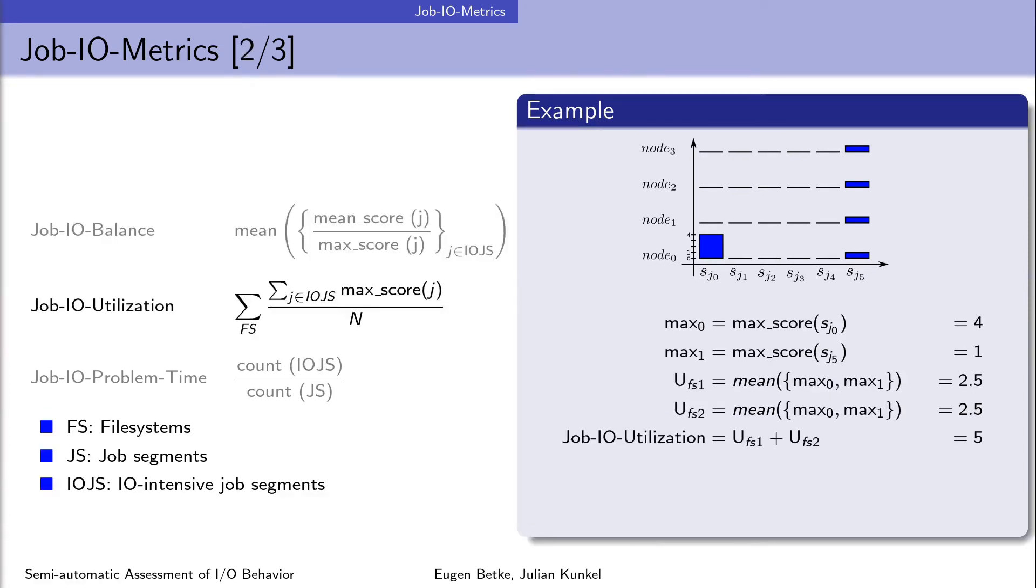Large jobs with a large number of I/O accesses can induce slowdown on the file system for other jobs. To identify such jobs we compute the job I/O utilization metric that shows the average load during I/O relevant phases. Assume that in the example data is accessed on two file systems in parallel. For computation we use again only the I/O intensive segments, the first and the last one. We find the highest metric scores for these segments on each node and compute the mean values. This is the utilization of a file system. To get the job I/O utilization we have to sum up the mean values of each file system and get an I/O job utilization of 5.